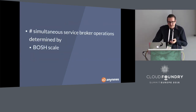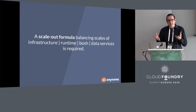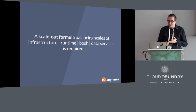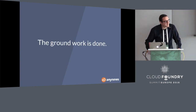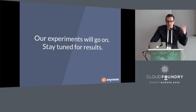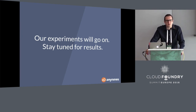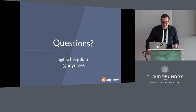The number of simultaneously occurring service broker operations is the first thing we should look at — not the total number, but the number happening in parallel. This is basically determined by the scale of BOSH and the scale of your infrastructure. The scale-out formula should have a balance between your infrastructure resources, your runtime, your BOSH, and your data services. We think the groundwork here is done and we will keep doing these experiments. Stay tuned — we are going to blog and post about it, as I think it's a valuable contribution to the entire Cloud Foundry community. Thank you for your attention, and feel free to ask questions.